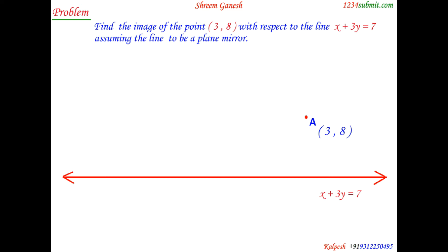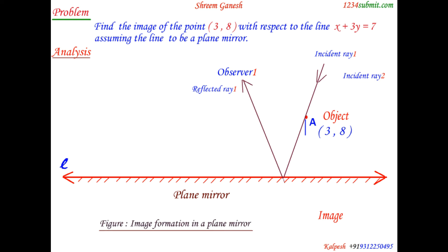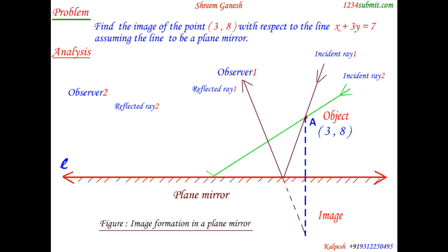Let us denote this given point as A and the given line as line L. According to the problem, we consider point A as an object and line L as a plane mirror. We are to find the image of point object A formed by the plane mirror. First fact: if the object and mirror are at rest, the image will be formed at a fixed position.